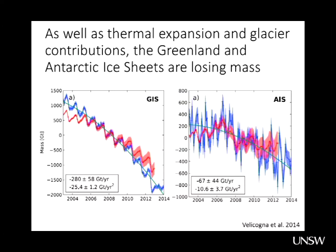Antarctica shows a smaller, more variable contribution with less clear acceleration. Much of the flow in Antarctica comes from the West Antarctic Ice Sheet, which is grounded below sea level. This allows for the potential of a rapidly accelerating flow of ice, leading to metres of sea level change. The question is how quickly that might occur, and that remains a major and ongoing controversy.